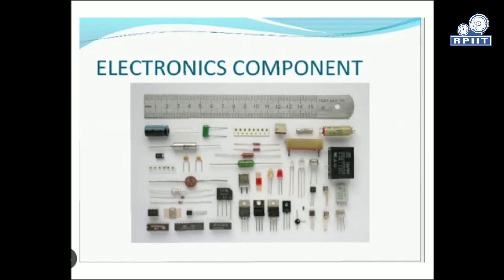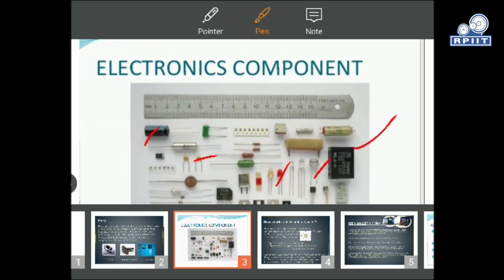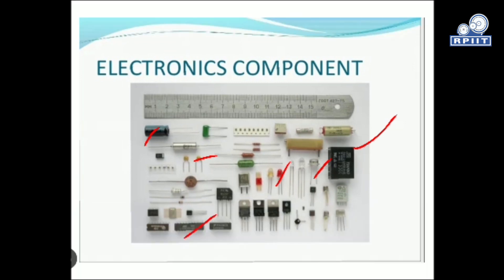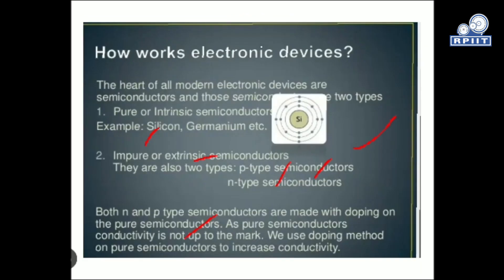Electronic components include all these components. LEDs are there, then oscillators, then resistors, ICs, capacitors, and so many other devices. These are the electronic components, and now let's look at how electronic devices actually work.